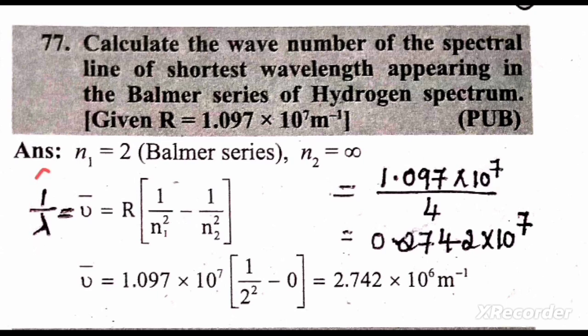Wave number is nothing but the reciprocal of wavelength, so wave number equals R, Rydberg's constant, times 1 by N1 square minus 1 by N2 square.